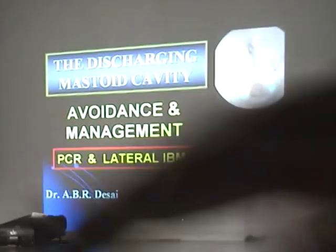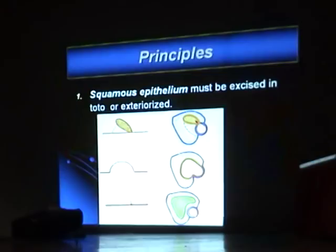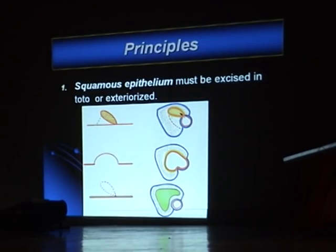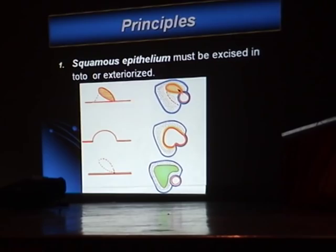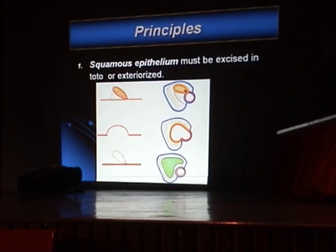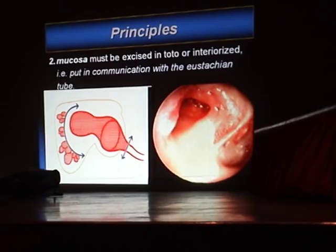There are two main techniques: posterior canal reconstruction and lateral intact bridge mastoidectomy. Both work very well. The principles of treatment of cholesteatoma are important: a cholesteatoma is an epithelial cyst, and squamous epithelium must be excised in toto or exteriorized. For huge invasive cholesteatomas, it is now possible to remove all cholesteatoma without any epithelium remaining, allowing an intact canal wall with no cavity problems.